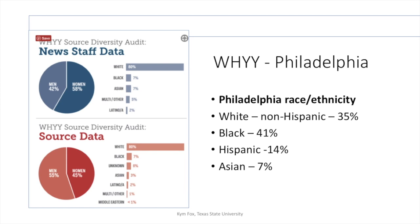I encourage you to spend more time with that. These kinds of source audits are not uncommon — the hope is to see better awareness for news staff. This one is from WHYY in Philadelphia, another NPR station, done several years ago. The staff of that station is more predominantly female: 58% women, 42% men — but 80% white, 7% Black. Looking at the source data, again 80% white — really matching the representation of the staff.